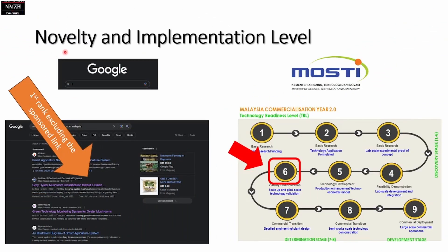Regarding novelty and implementation levels, by searching the Google platform with the term 'smart gray oyster mushroom Malaysia,' we are ranked first in the sponsored link. We can describe our product as TRL number 6, whereby we are currently scaling up with pilot-scale technology validated in a real gray oyster mushroom house.